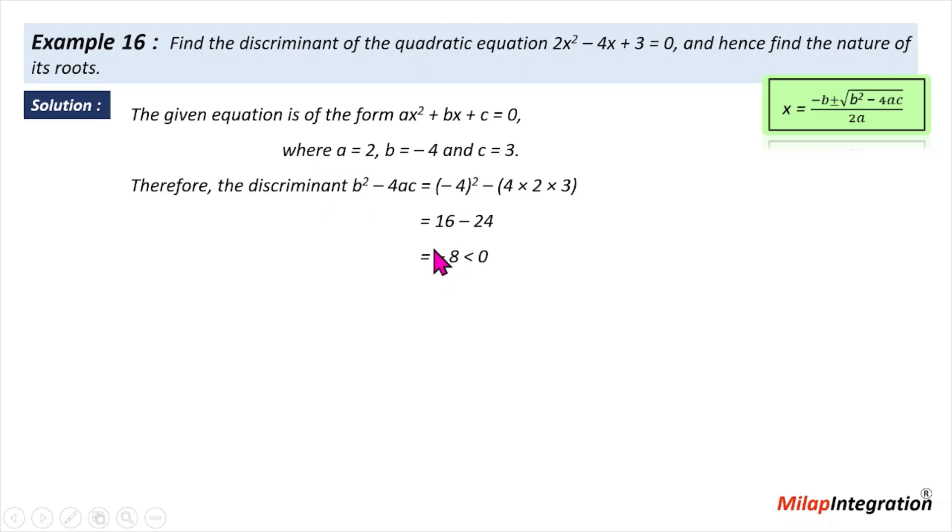If the discriminant value is less than 0, we say this quadratic equation has no real roots. That means the roots are imaginary. Since the given equation has no real roots because the discriminant is less than 0. Clear? So we have solved this equation.